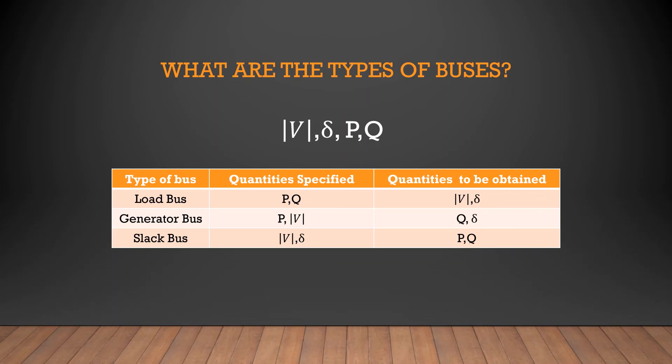The load bus is also known as the PQ bus. P and Q are specified; |V| and delta are to be obtained. The magnitude of voltage and phase angles are unknowns until the final solution is obtained. These are the brief descriptions of the types of buses.